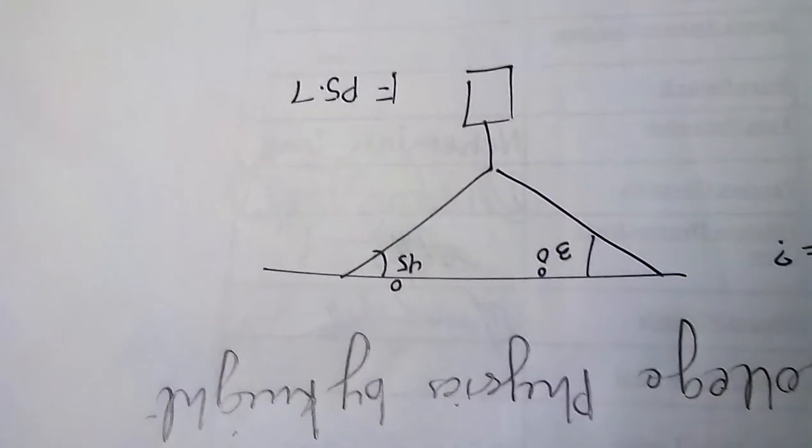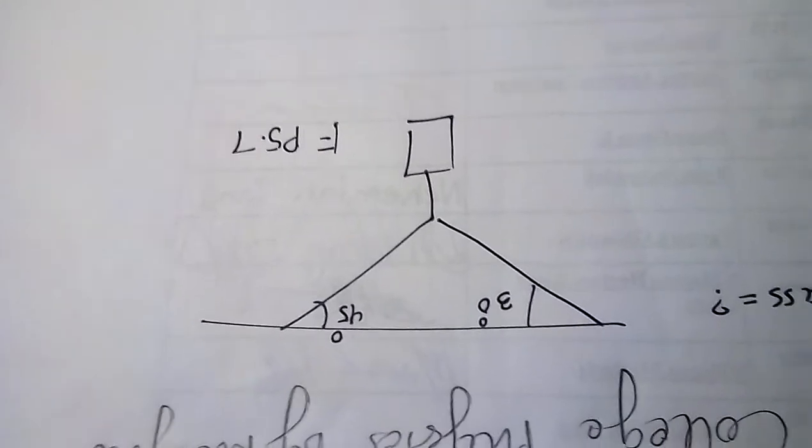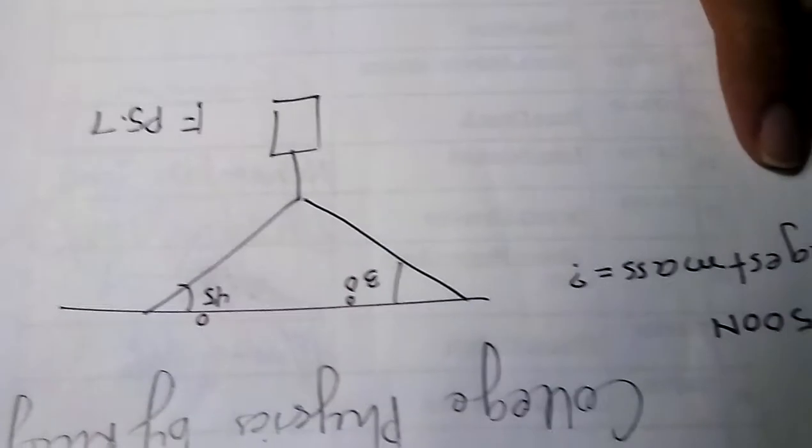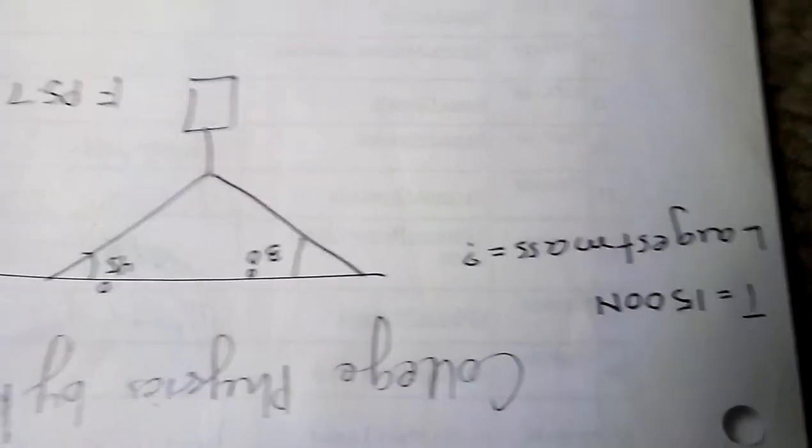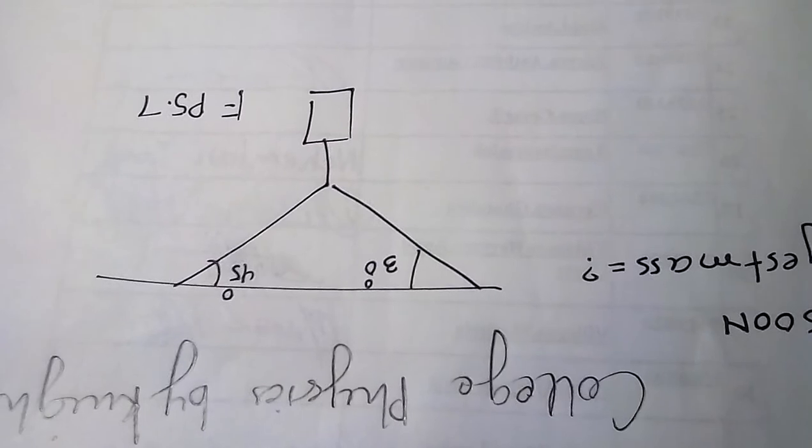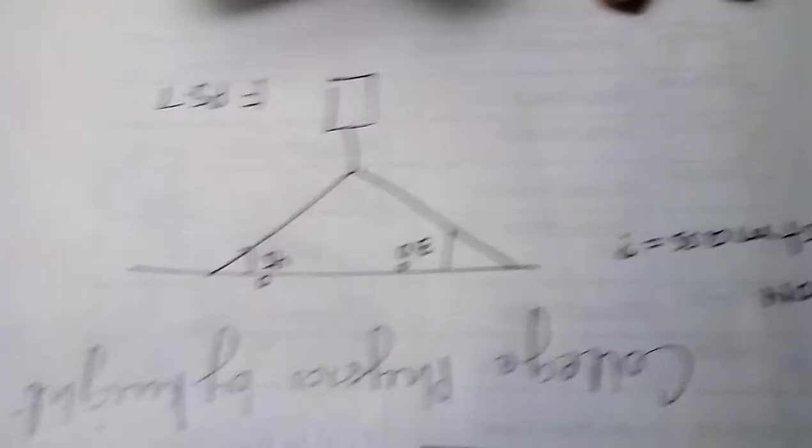So that's the figure, the same figure I drew on the paper, and the name is figure p5.7. Okay, so they asked us to find the largest mass and they have given us the tension and the two angles.